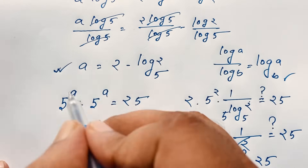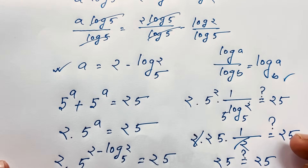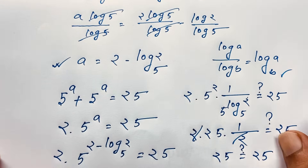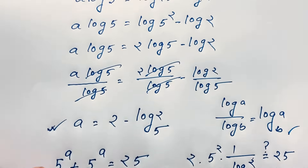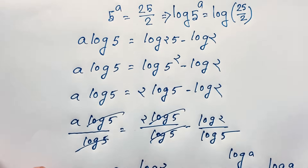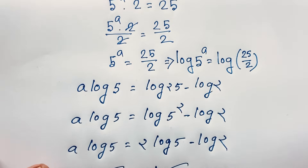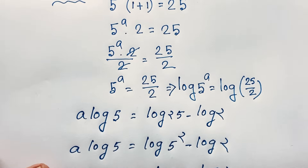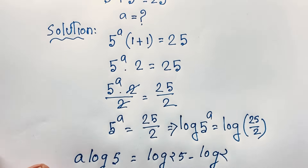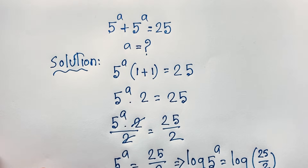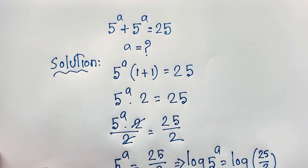So in this exponential math problem, a is equal to 2 minus log base 5 of 2. This is our final answer. Thank you all — if you enjoyed this math question, please subscribe to my channel for more interesting videos. Goodbye, take care!